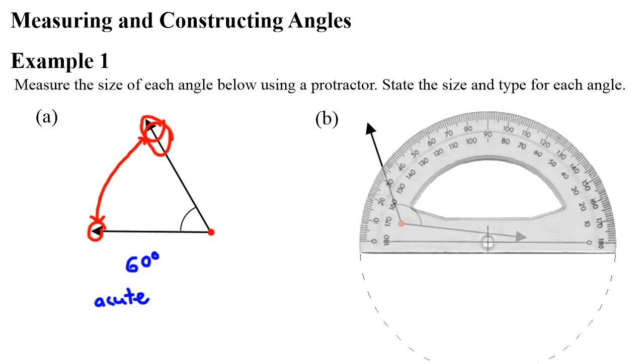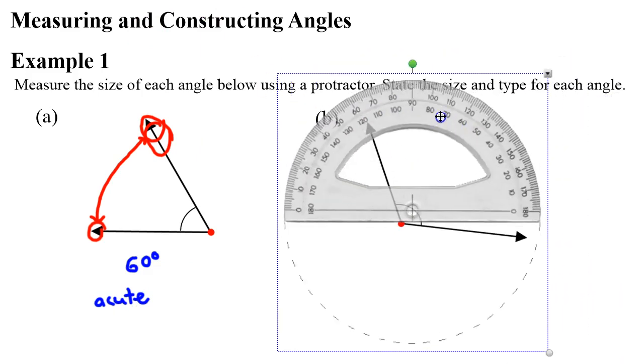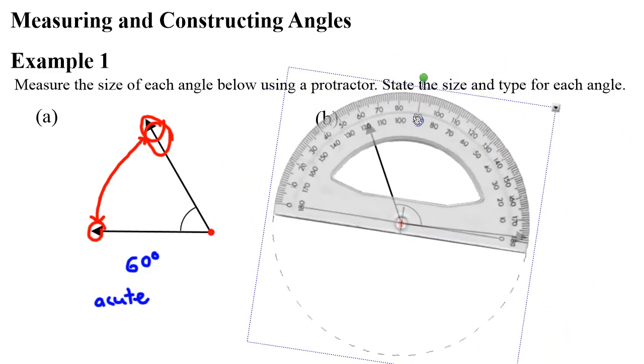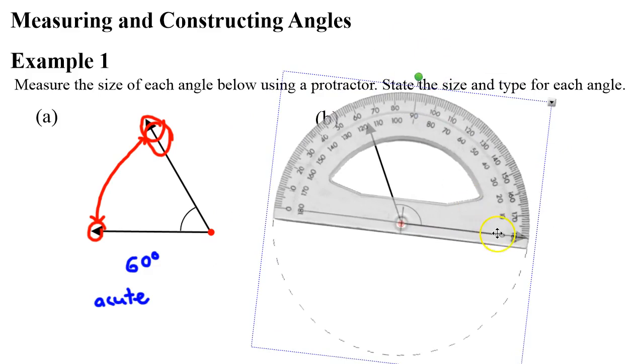All right, let's move on to question B. Once again, we take our center point and place it over the vertex of the angle, and then we keep moving our protractor until one of the arrows points to zero. Now this time, the zero is on the inside of the set of numbers here.